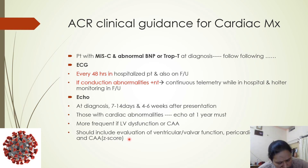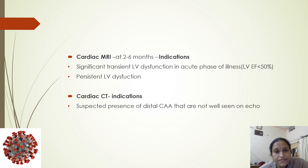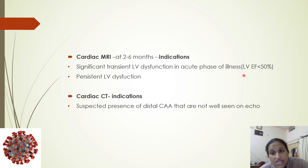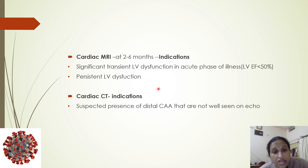Echocardiography should include evaluation of ventricular and valvular function, pericardial effusion, and coronary artery aneurysm with Z-score calculation. Cardiac MRI is indicated if there was significant transient left ventricular dysfunction in the acute phase with ejection fraction less than 50%, to be done at 2 to 6 months after presentation, and if persistent left ventricular dysfunction is present — looking for any fibrosis or scarring of the myocardium. Cardiac CT is indicated when distal coronary artery aneurysms are suspected but not well visualized on echocardiography.